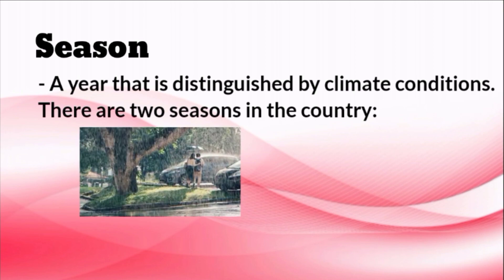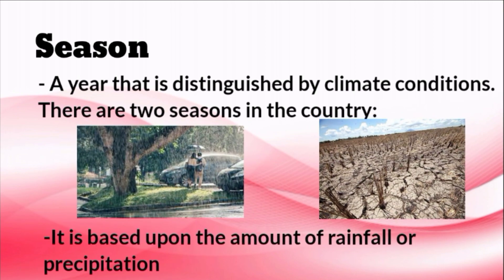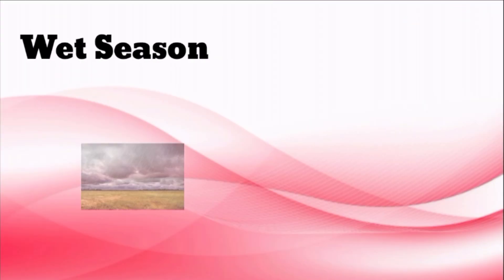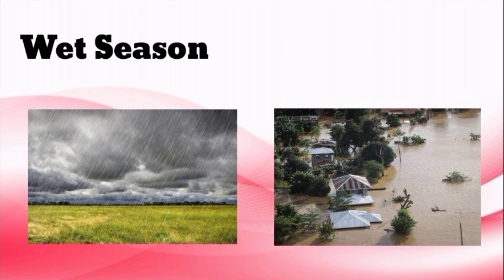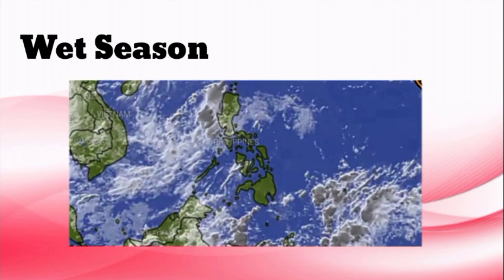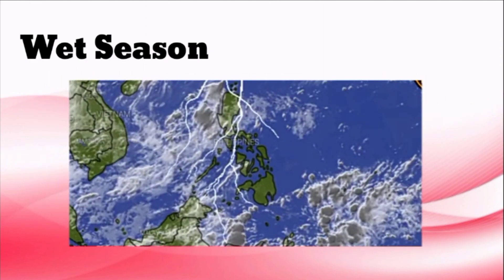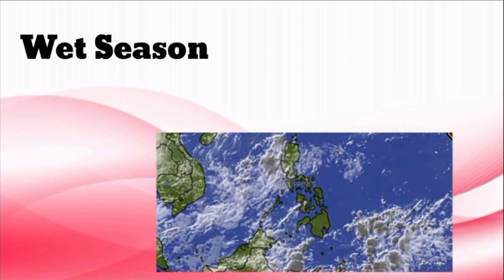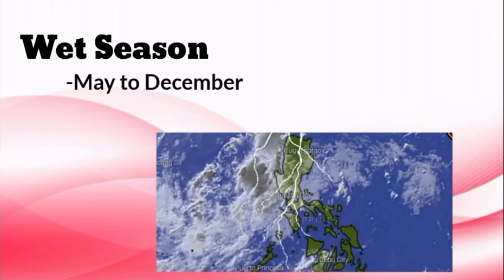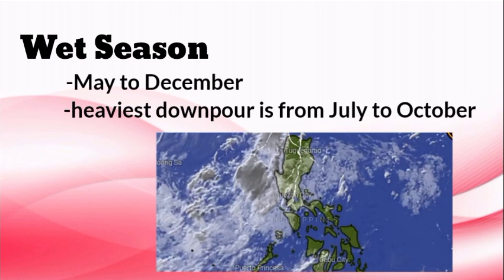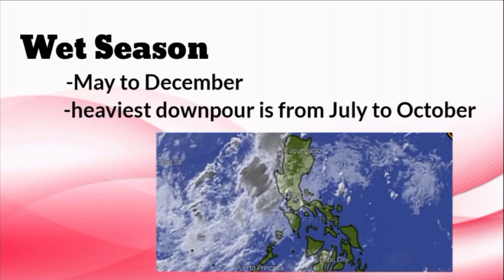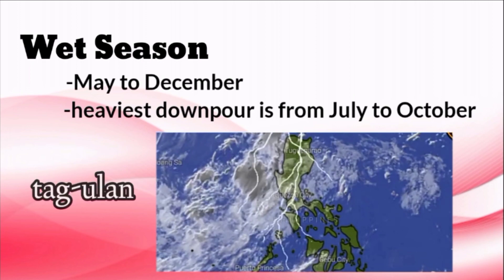There are two seasons in the country: the wet and the dry season. It is based upon the amount of rainfall or precipitation. The first season is the wet season, characterized by heavy rainfall and floods. It is during the wet season when the country experiences most of the storms. It is experienced during the months of May to December, but the heaviest downpour in most areas is from July to October. Locally, it is also known as tag-ulan.